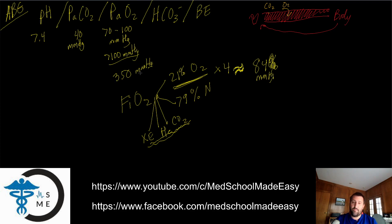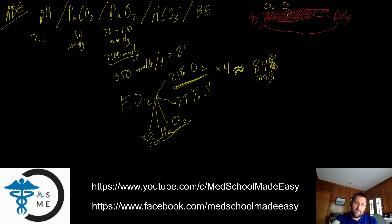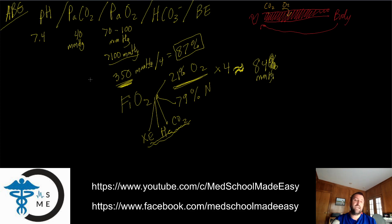For example, if I see 350 mmHg on a blood gas, I divide by four: 350 ÷ 4 = 87.5, which means the patient is breathing approximately 87% FiO2 — maybe they're on a ventilator with a controlled FiO2. Remember, this is the dissolved portion — not your oxygen saturation, but the dissolved pressure of oxygen.